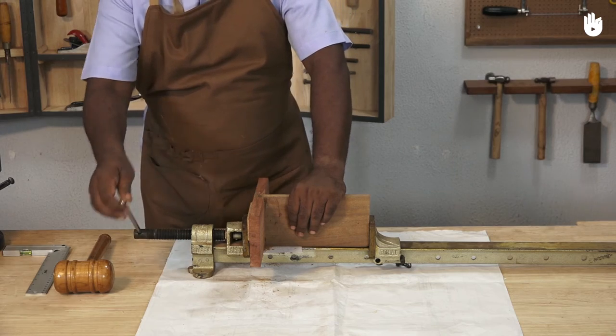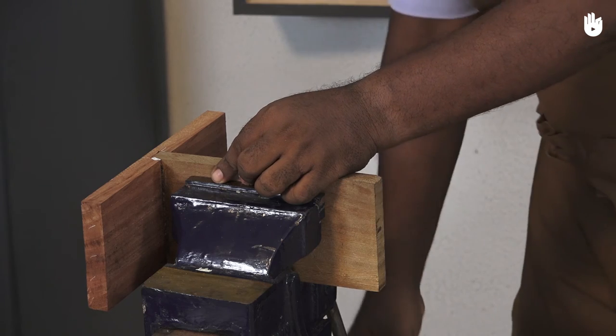Once the glue has dried, unclamp the joint and fix it by the tenon on a vise.